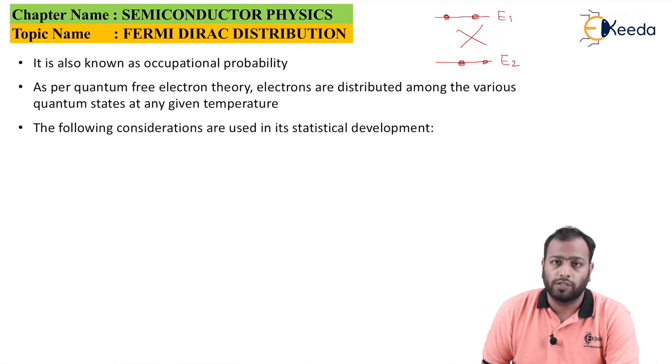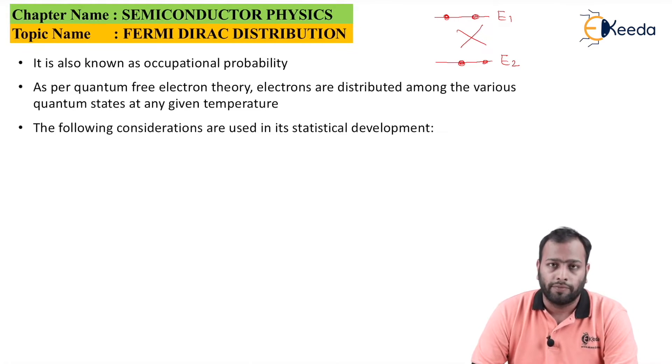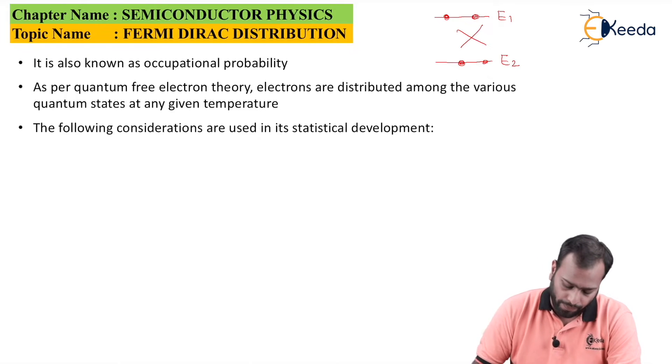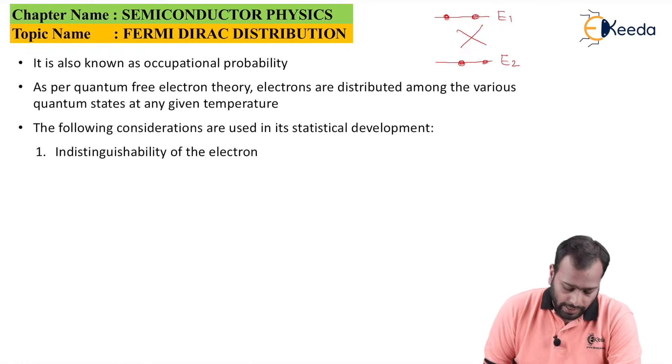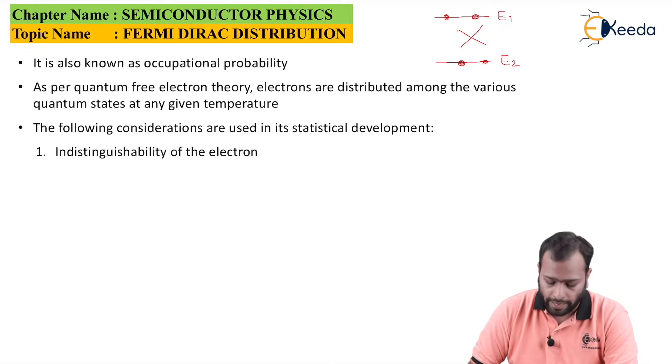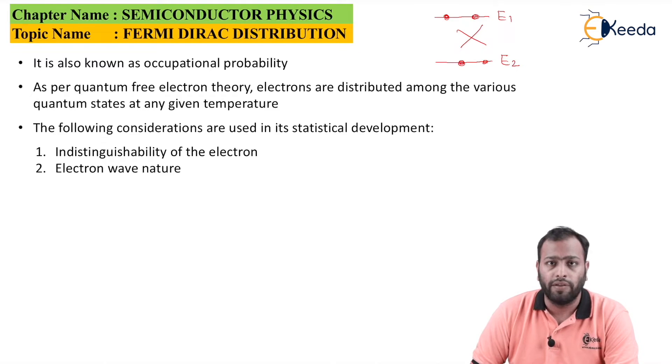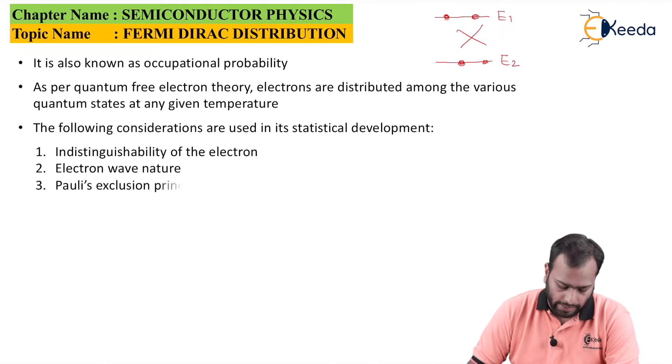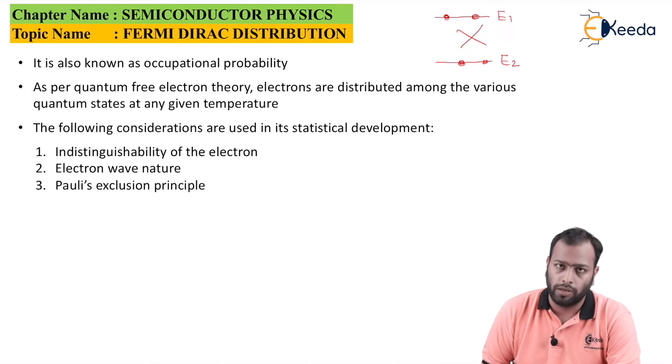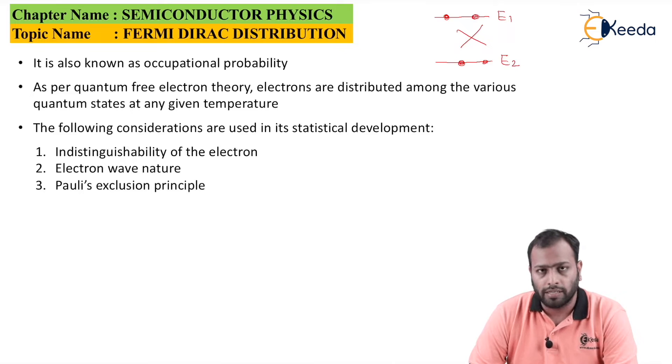The following considerations we have taken into picture while preparing the function of Fermi-Dirac distribution. The first one is indistinguishability of the electron, second is electron wave nature or the wave theory of the electron, and next is the Pauli's exclusion principle. Considering all the three factors, we have developed the probability distribution function.